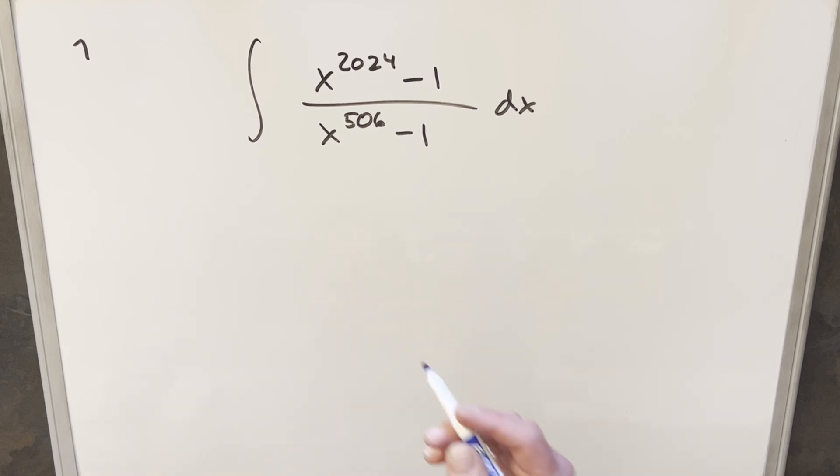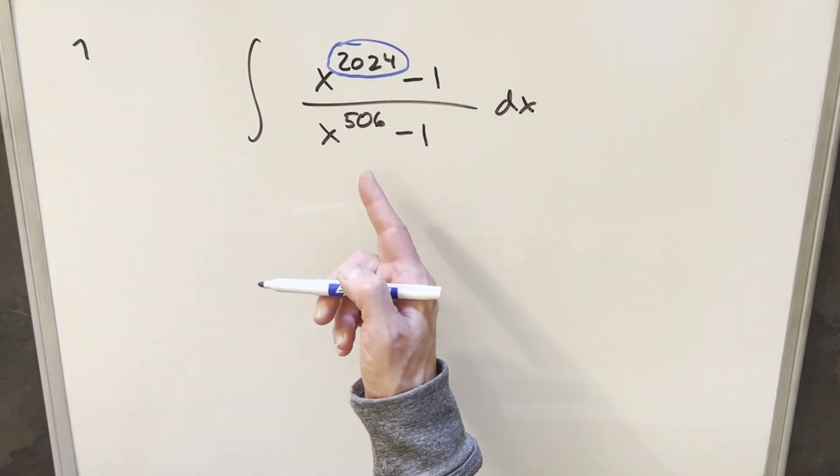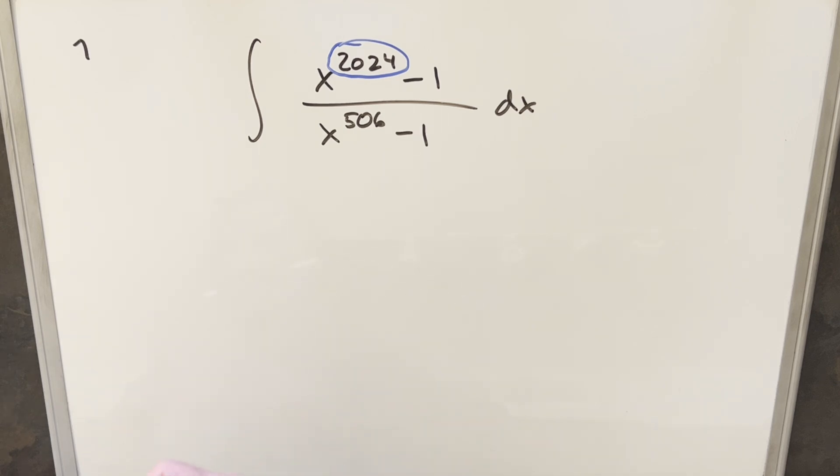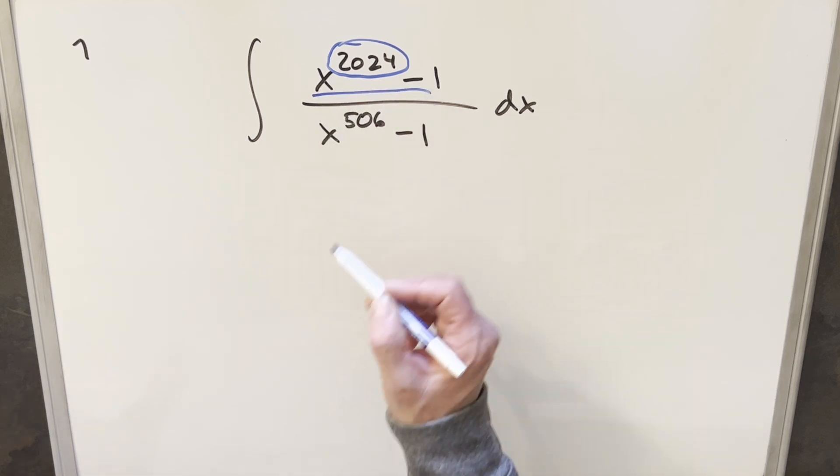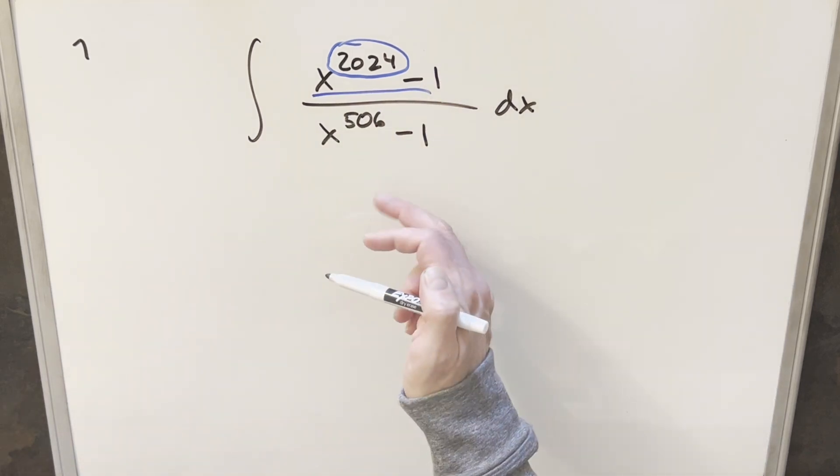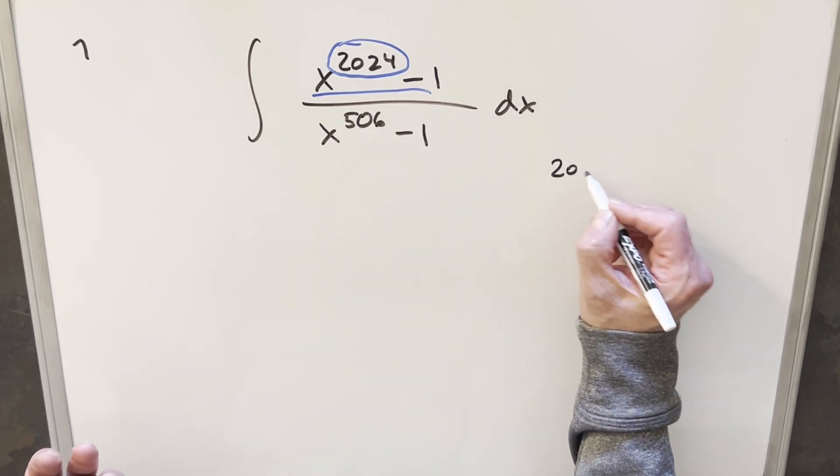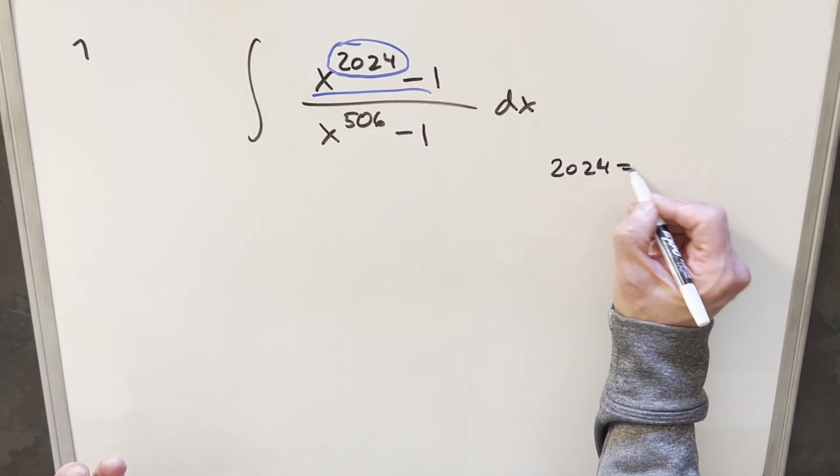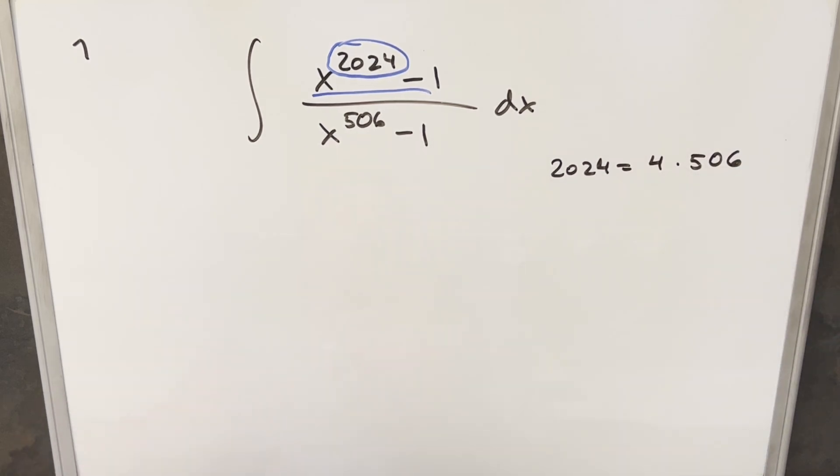Okay, a couple things I see here. So first, clearly we've got a higher power in the numerator, so this is kind of a case where we might want to use polynomial long division. But the thing is, because we've got this minus 1 here, this is clearly factorable. So maybe we can just get some simplification by factoring this. And the other thing is this relationship between 2024 and 506. 2024, this just happens to be 4 times 506. So that's going to work together pretty well that way.